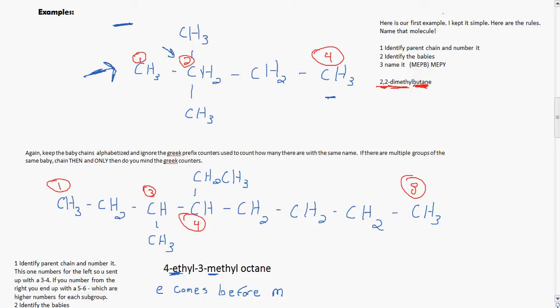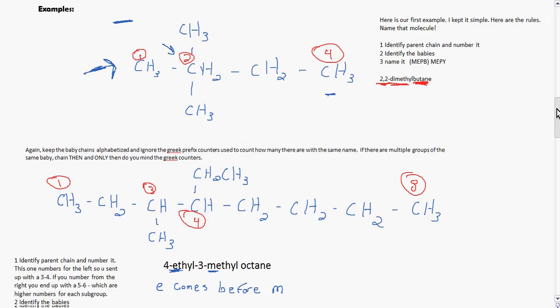So again, keep the baby chains alphabetized and ignore the Greek prefixes used to count how many there are with the same name. If there are multiple groups of the same baby chain, then only then do you mind the Greek counters. So let's move on to another example.